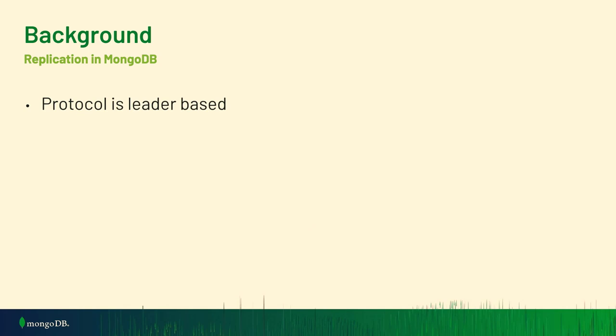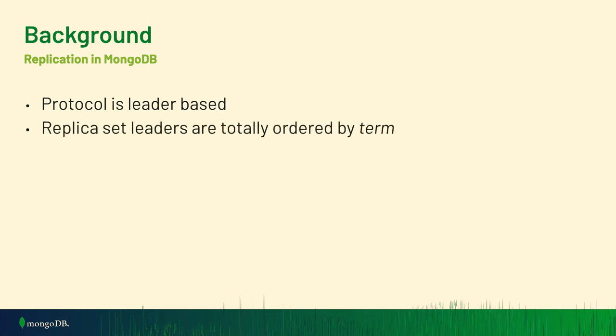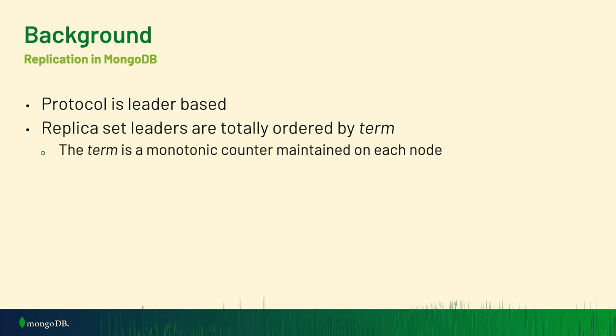The protocol is leader-based. A concept to keep in mind is this notion of a term. Replica set leaders are ordered by term — it's basically a counter maintained locally on each node, with certain rules about how to update it. One important rule is that there can only ever be one replica set leader per term.